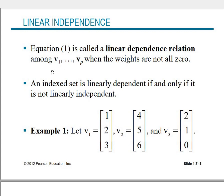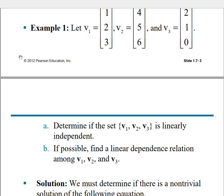Equation 1 is called a linearly dependence relation among V1, V2, ..., Vp when the weights are not all zero. An indexed set is linearly dependent if and only if it is not linearly independent. Let's do an example.